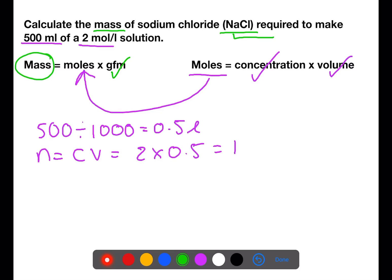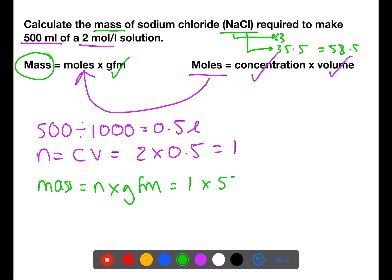The gram formula mass for sodium chloride is 23 plus 35.5, which equals 58.5. So for the mass we're going to do moles times gram formula mass. The moles we have just calculated as one and the gram formula mass is 58.5. So to make this solution you would have to weigh out 58.5 grams of sodium chloride.